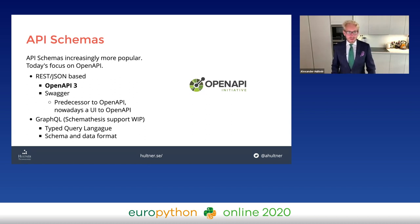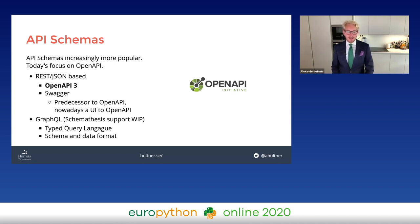For those unfamiliar with API schemas, they're used to describe an API. One of the most widespread standards today is the OpenAPI spec, previously known as Swagger. Swagger today is a UI for OpenAPI, but also references older versions 1 and 2 of the spec - it's based on REST and JSON. I'll also touch on GraphQL, a typed query language where the schema and data format are part of the specification, which has some support in Schemathesis and is work in progress.